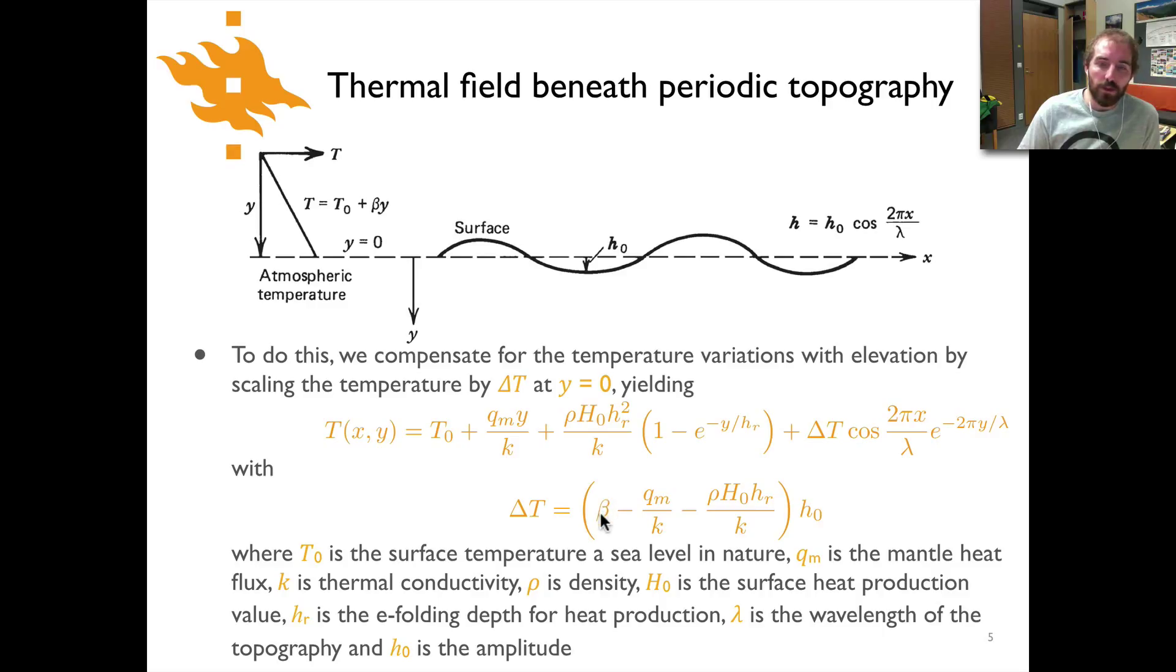So that's going to be the length of a complete wave here in the surface topography. The delta t term that's the term that compensates for the fact there would be variations in the elevation of the earth's surface but we're going to assume it's flat and just vary temperature to simulate that effect. It contains a beta which is the lapse rate the change in temperature with elevation in the atmosphere. There's the basal heat flux the temperature flux at the base of the crust qm divided by kappa and then rho h naught there's e folding depth k and then that's multiplied by h naught which is the relief for the elevation.